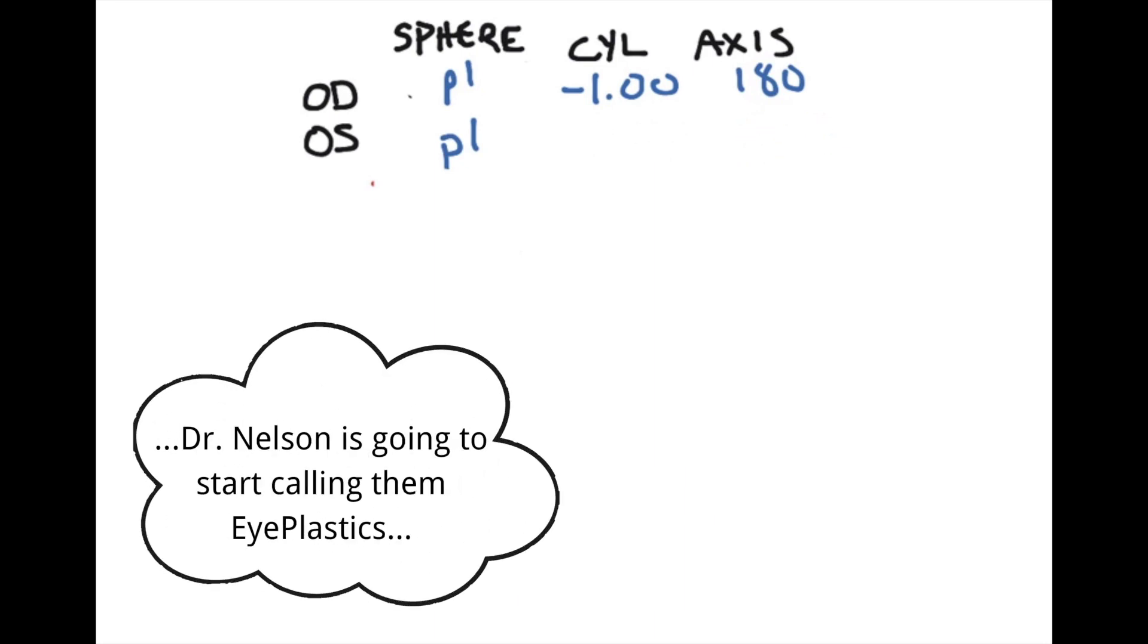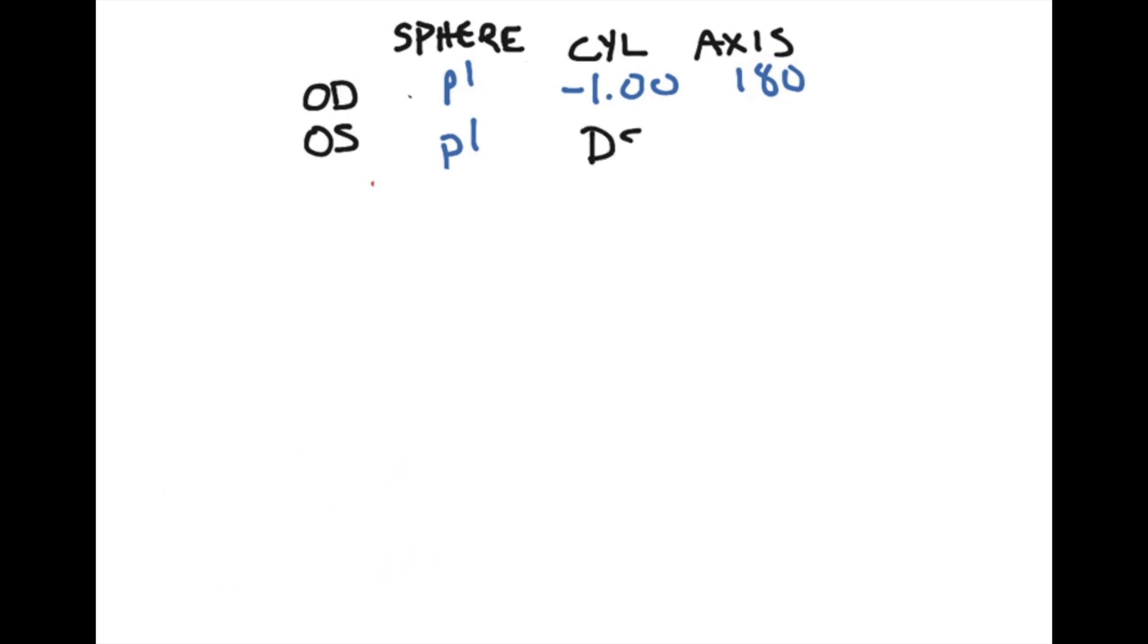There is a different notation for when the cylinder is equal to zero, and the notation for that is DS. DS stands for diopter sphere, which is an indication that in this prescription there is no astigmatism and that the whole power is a spherical lens. So as a quick review: when the sphere is equal to zero then we write plano or PL. When the cylinder is equal to zero then we will write DS.